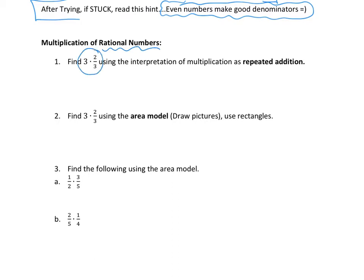One way to think about multiplication is repeated addition. Three times two-thirds means two-thirds plus two-thirds plus two-thirds — adding two-thirds three times. Since they have the same denominator, we keep that as the size and add the numerators: two plus two plus two gives six thirds, and six thirds equals two.